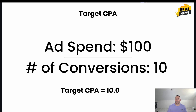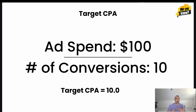You might wonder why everyone wouldn't just set an insanely low target CPA. That gets into the dynamics of the ad auction. If you halved your CPA — say from $10 to $5 — that's essentially doubling the campaign's efficiency, but your spend could drop significantly because Google may not be confident it can achieve that target. Google would restrict your ads to only the top potential customers, so while efficiency might improve, the quantity of conversions could decrease significantly.